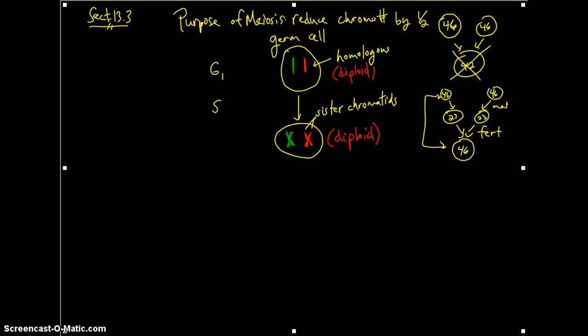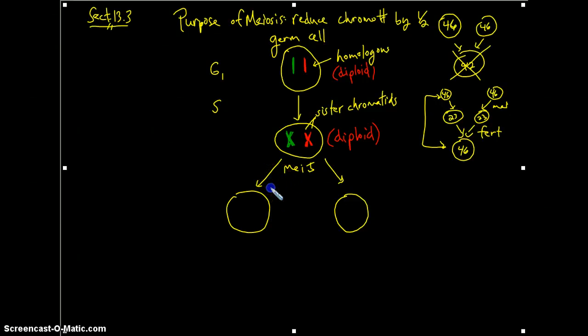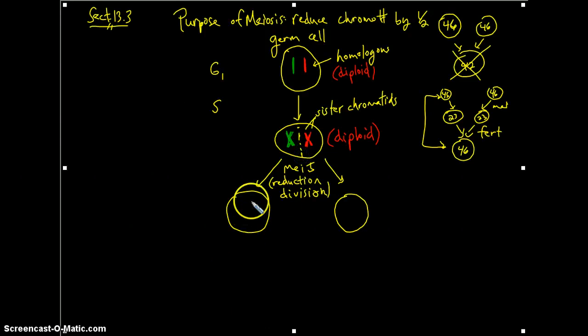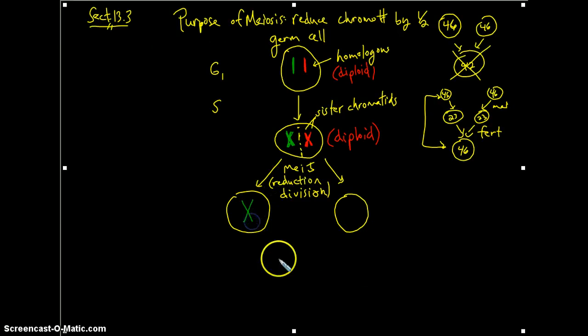Now, meiosis will take these diploid cells and divide them. So during the process of meiosis I, we're going to take these diploid cells and divide them. Now, meiosis I is sometimes called or referred to as reduction division.